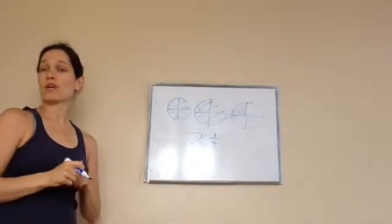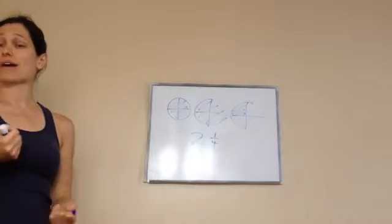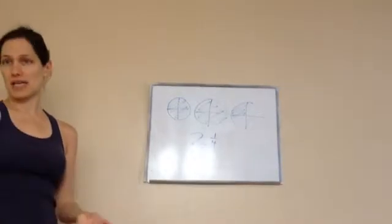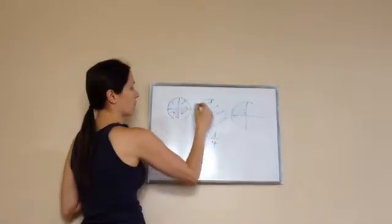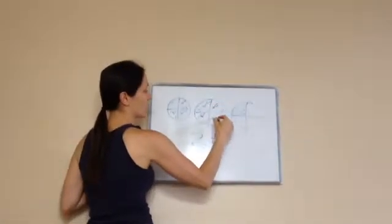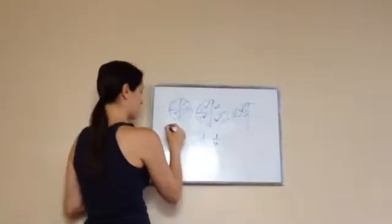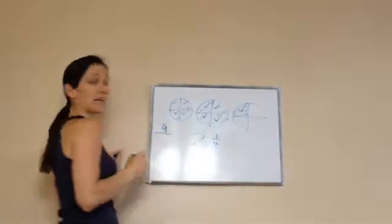But if we wanted to do it as an improper, then we count how many pieces and then how many cuts. So how many pieces are there? One, two, three, four, five, six, seven, eight, nine pieces, and how were they cut?